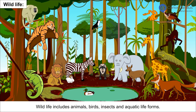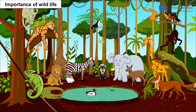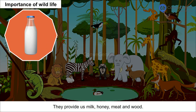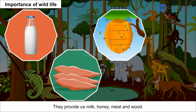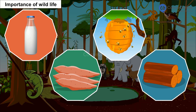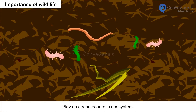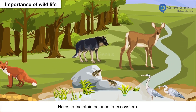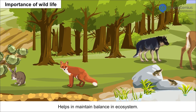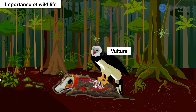Wildlife includes animals, birds, insects and aquatic life forms. Wildlife provides us milk, honey, meat and wood. Wildlife also helps in pollination of flowers, plays the role of decomposers in the ecosystem, and helps in maintaining balance in the ecosystem. For example, the vulture is a scavenger and feeds on dead livestock to keep the environment clean.